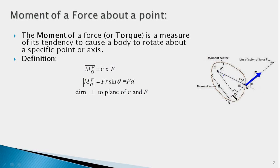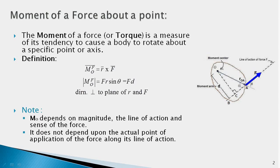Moment of a force is a vector and its direction is along an axis normal to the plane containing the position vector and the force. There are two important points to note. The first is that the moment of a force depends on the magnitude of the force, which is evident from the equation M equals F times d. It is also dependent on the line of action — the farther the line of action from the moment center, the larger its moment.